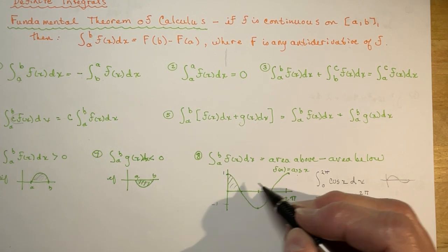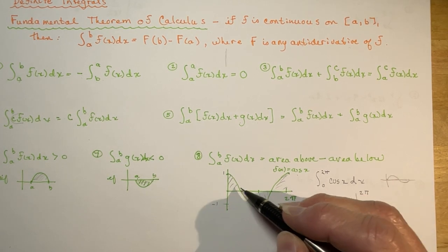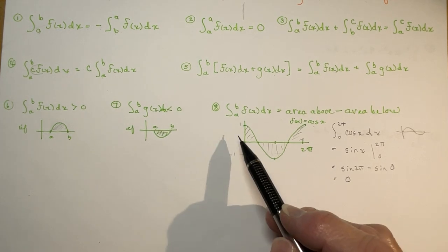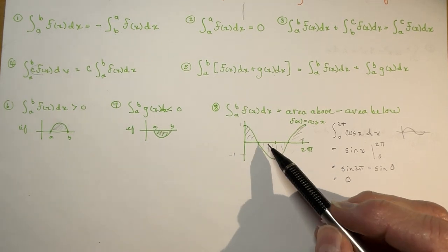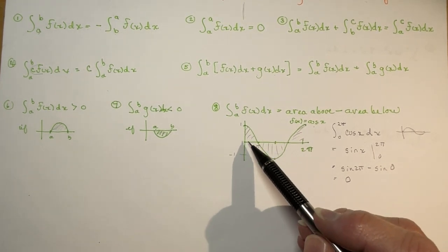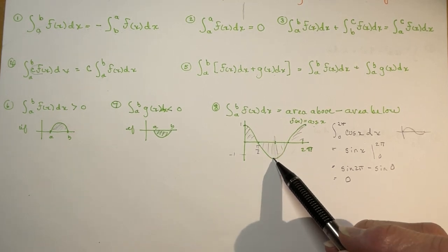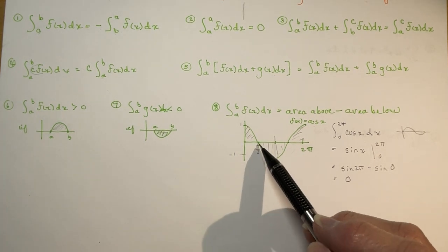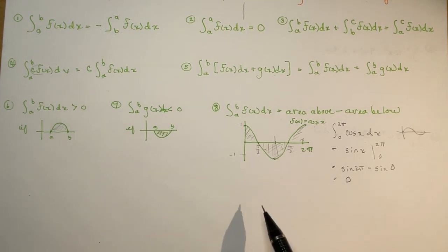That's because the positive part and the negative part under the axis are being subtracted from each other. If you were to find a positive or negative area, you'd have to look between 0 and π/2 — you would get a positive area. Between 0 and 2π you'd get 0 again because these two cancel out. And between π/2 and 3π/2 you'd get a negative area.